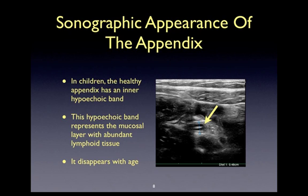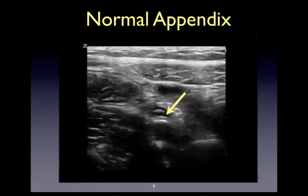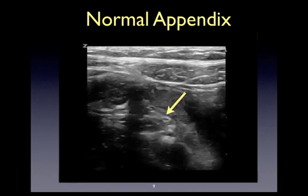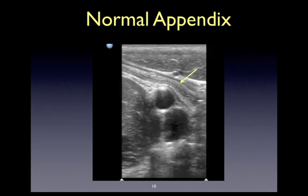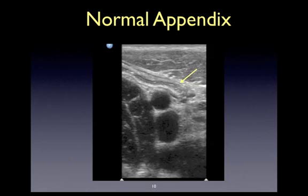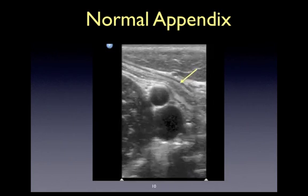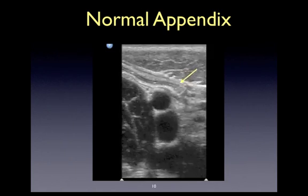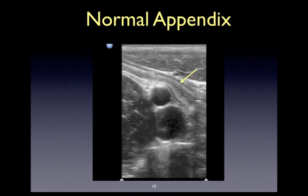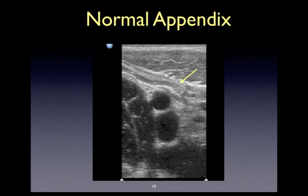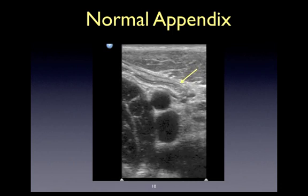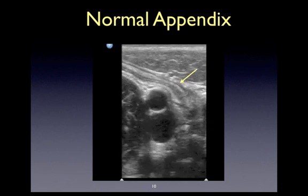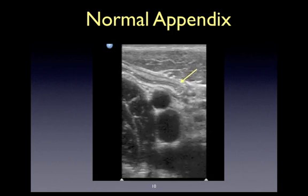Here is a beautiful example of a subtle non-inflamed appendix. Here is another beautiful example of a non-inflamed appendix where you'll also be able to appreciate the various wall layers. Another important key aspect to appreciate is that this appendix is overlying the iliac vessels at the level of the psoas muscle.